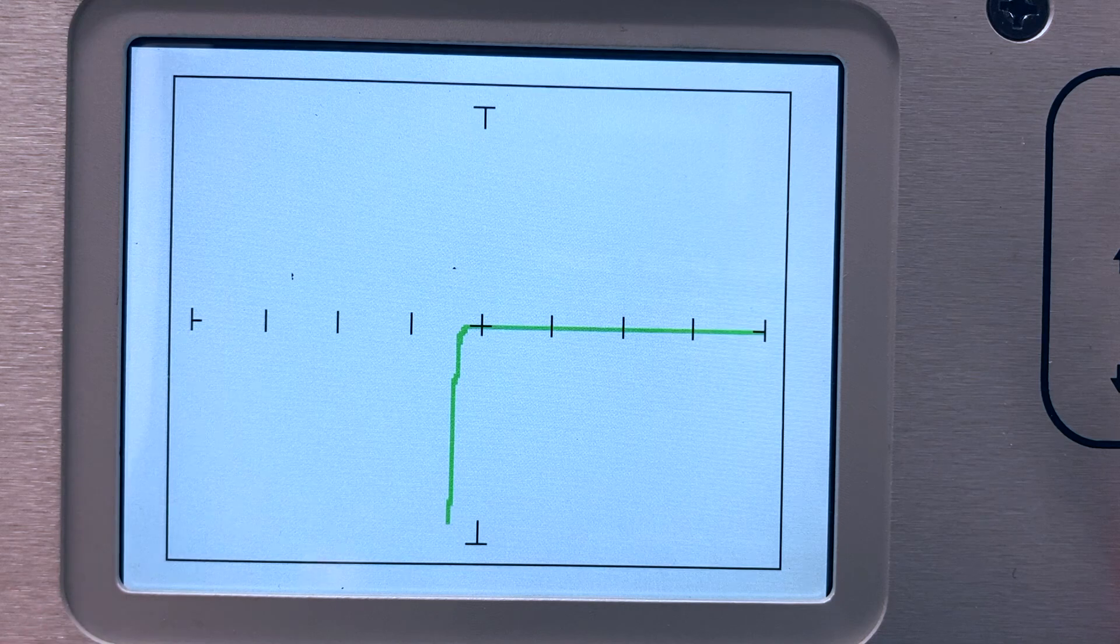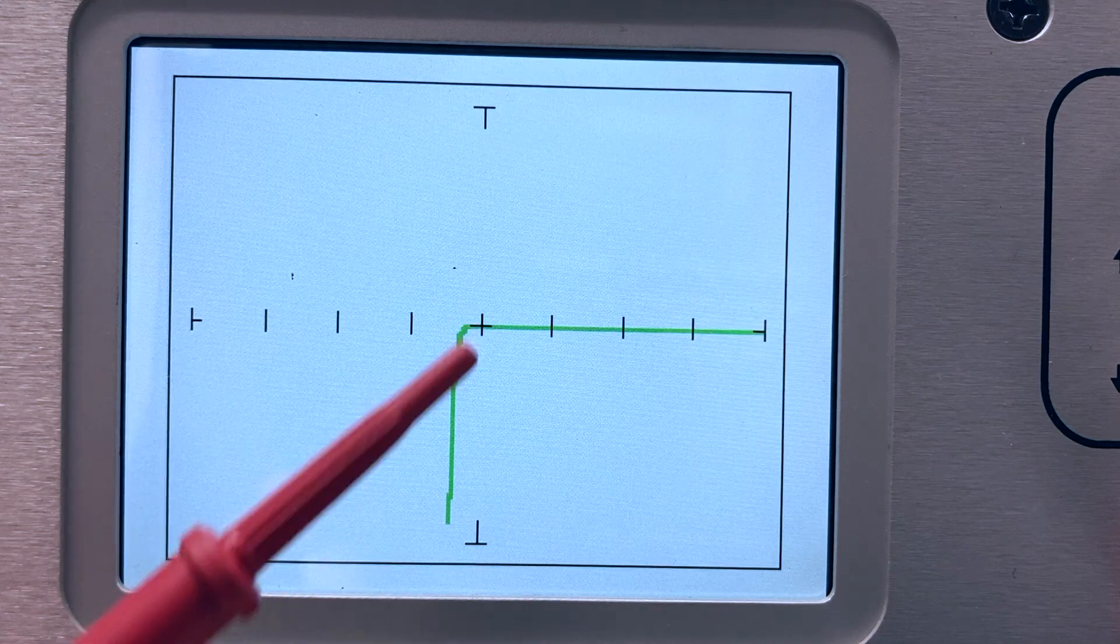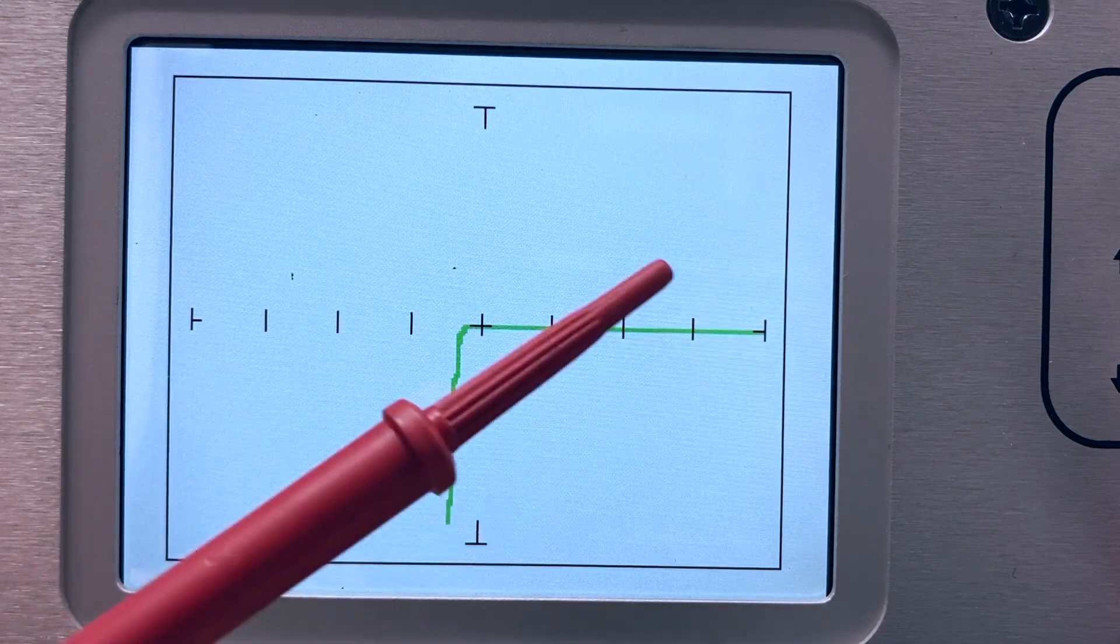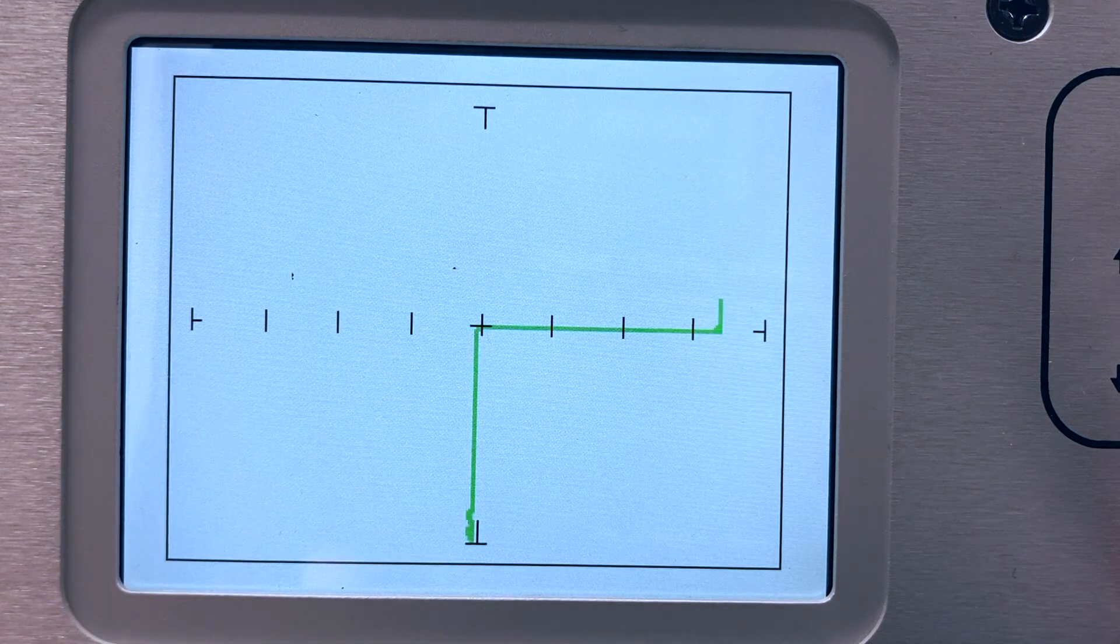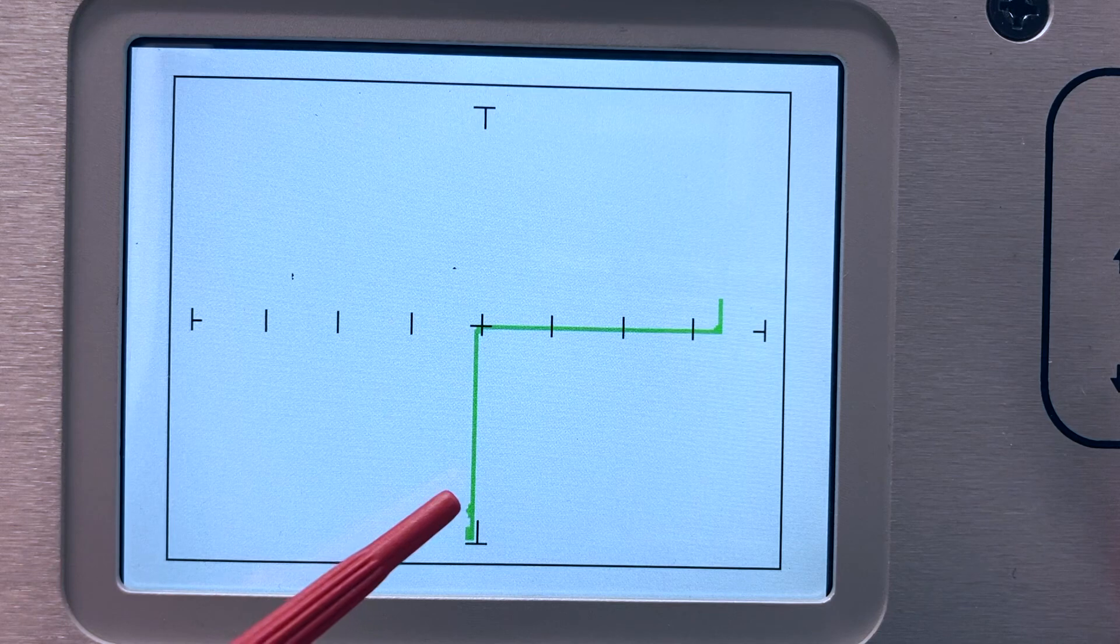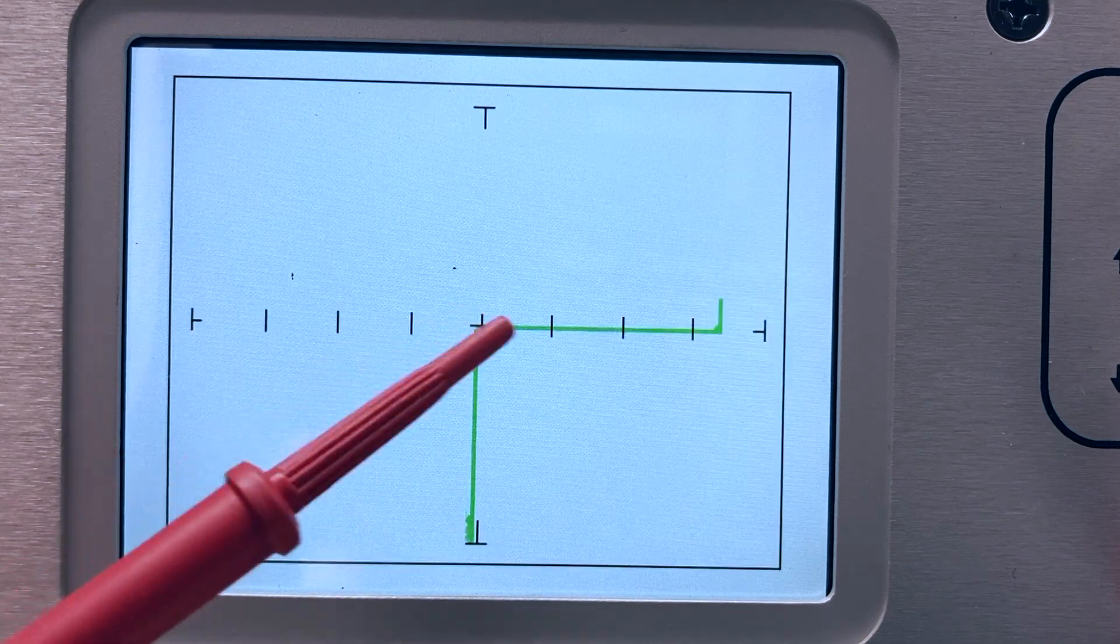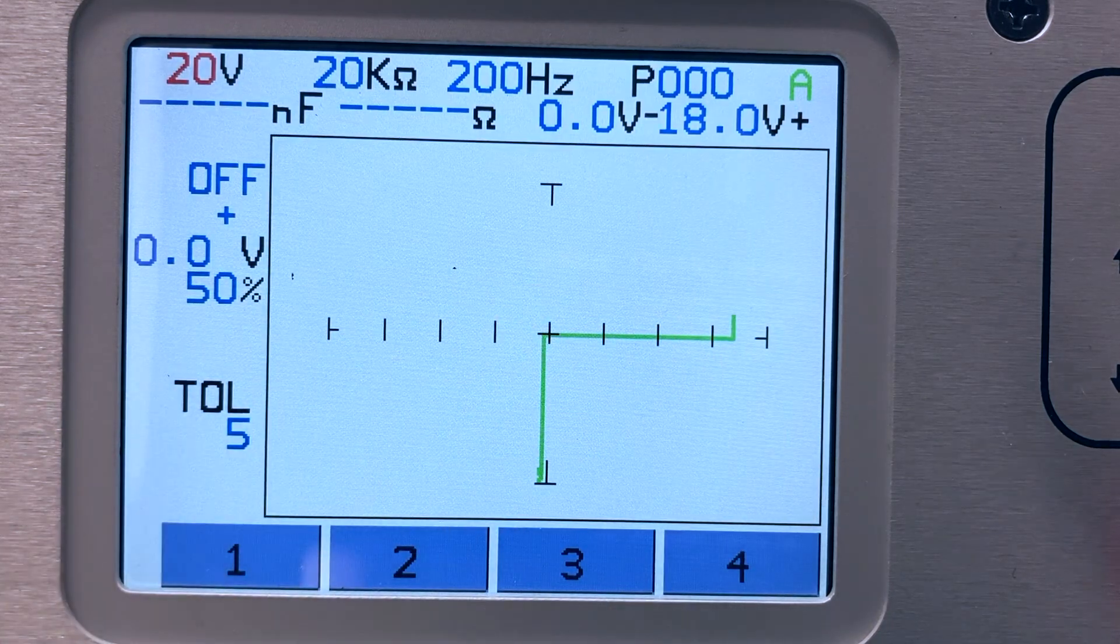When testing from the base to the collector of this NPN transistor, you will typically see a simple diode signature. Test between the base and emitter and you will usually see a Zener signature shape. This occurs because of the construction of the device.